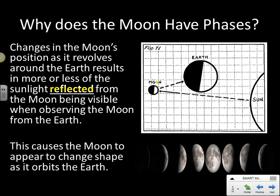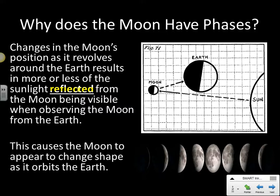The changes in the moon's position as it orbits the Earth — and the light that reflects off it — make it appear to have different phases. That's why the moon appears to change shape each month, and it has everything to do with the light being reflected off the moon and what is observed from Earth.